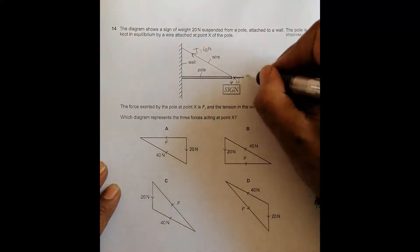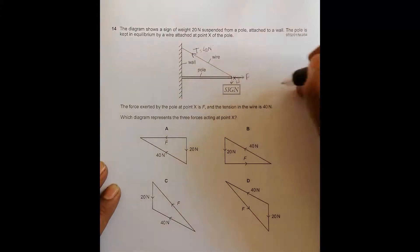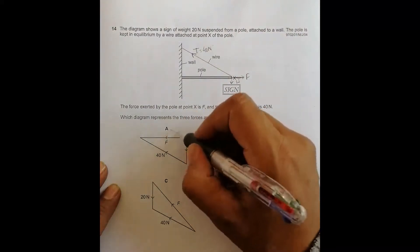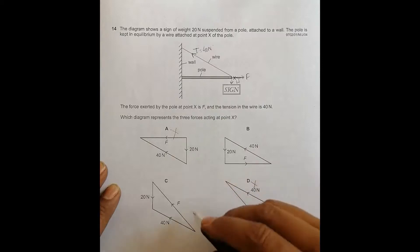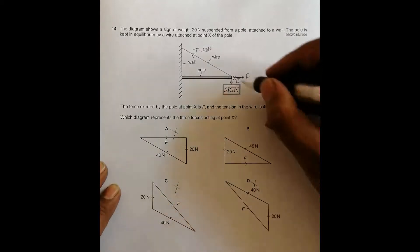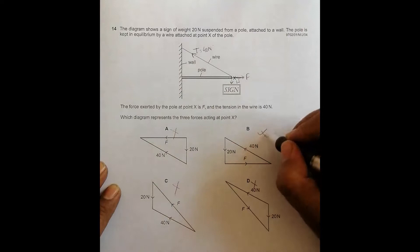The force F exerted by the pole on X should be in this direction. F in this direction, this qualifies. And here, F in this direction, this qualifies. F here, this qualifies. And here F is in this direction, so this qualifies.